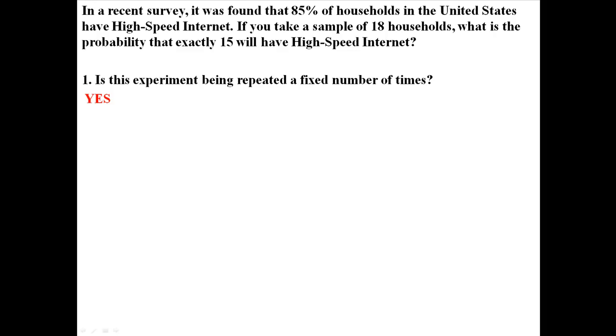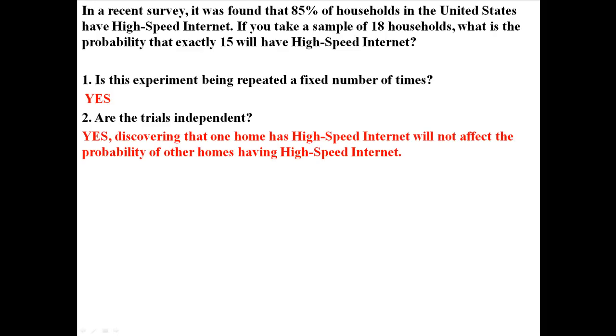Is the experiment being repeated a fixed number of times? Yes. Are the trials independent? Yes. Discovering that one home has high-speed internet will not affect the probability of other homes having high-speed internet.